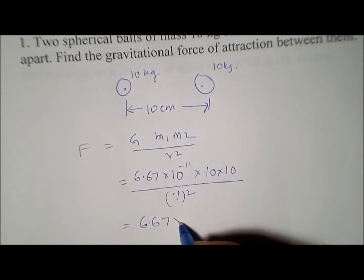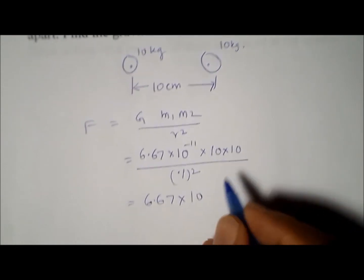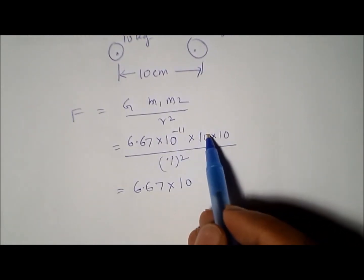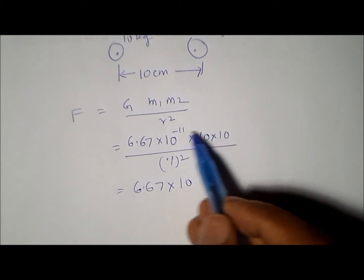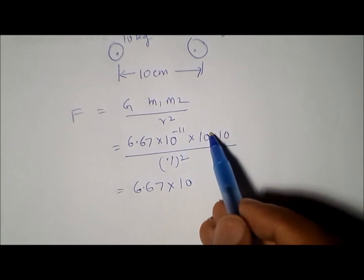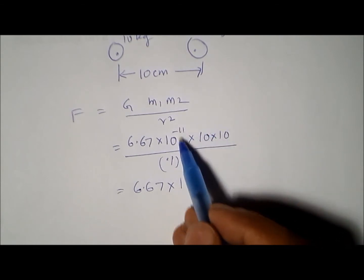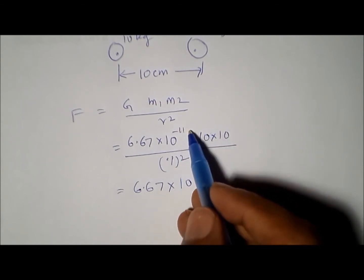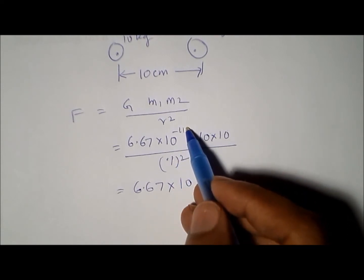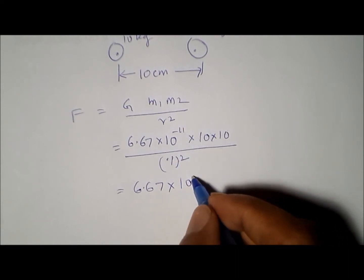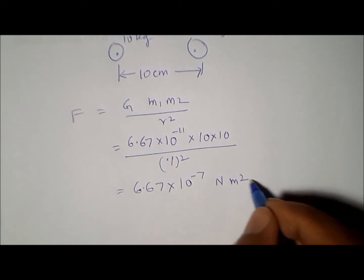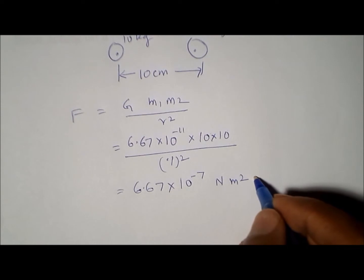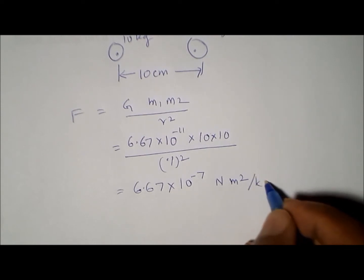6.67 into 10 to the power — this is 10 to the power 2 in the denominator, so 10 to the power minus 2 goes up, and 11 minus 2 is minus 9, then this goes up and gives plus 2, so minus 9 plus 2 which is minus 7. Its unit is Newton meter square per kg square.